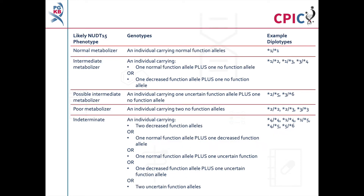Metabolizer phenotypes can also be assigned to NUDT15 diplotypes, as shown in this table adapted from Table 1 of the guideline. Gene information tables for NUDT15, including a diplotype phenotype table, are also available on the PharmGKB website. A link to the NUDT15 gene information tables is given in the description below this video.